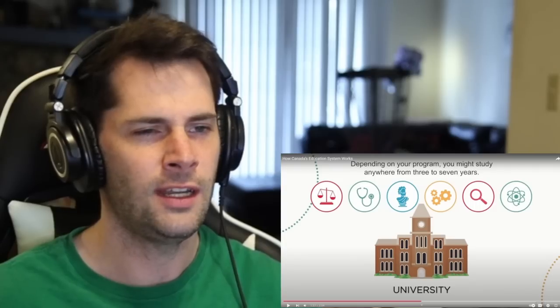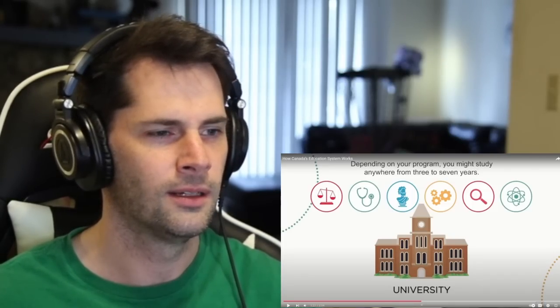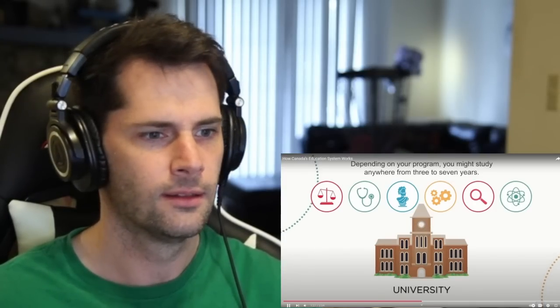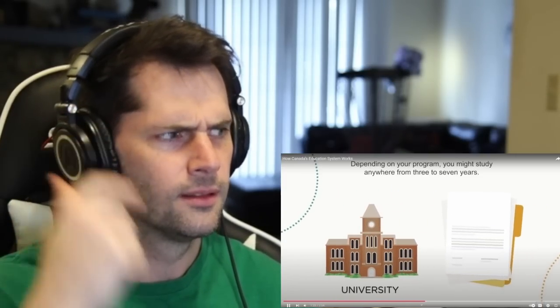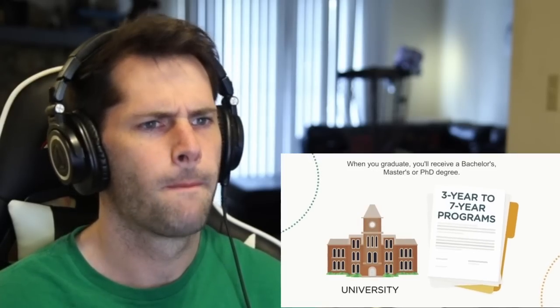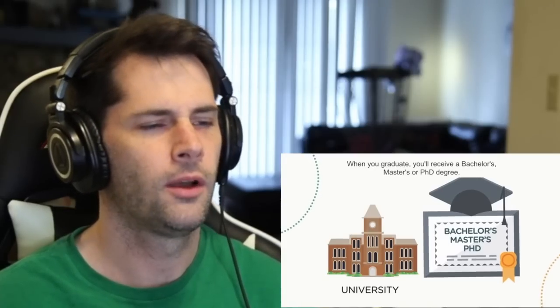Three to seven years. If you're going for seven years to a university, do you get a master's degree as well, or something more than a bachelor's degree for seven years? Depending on your program, you might study anywhere from three to seven years. When you graduate, you'll receive a bachelor's, master's, or PhD degree. Okay.